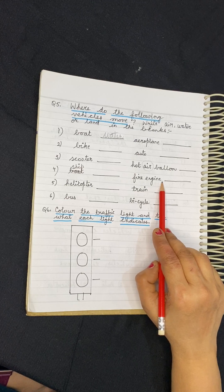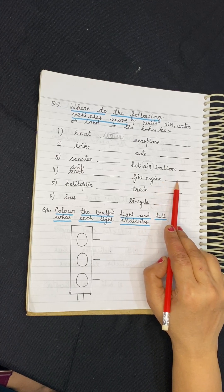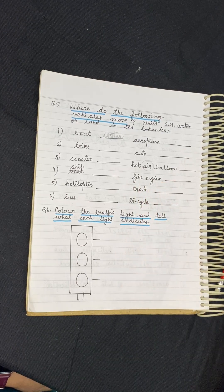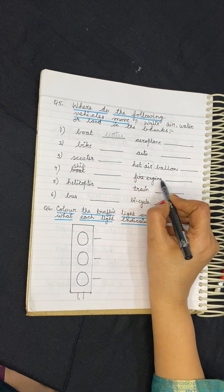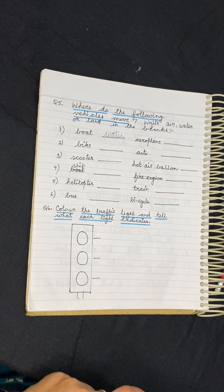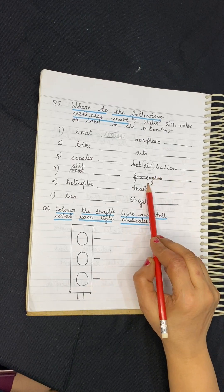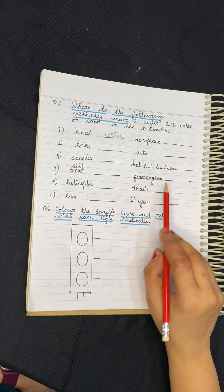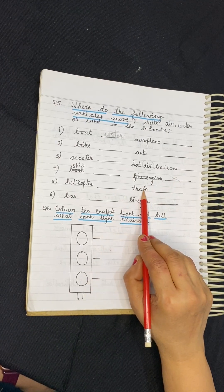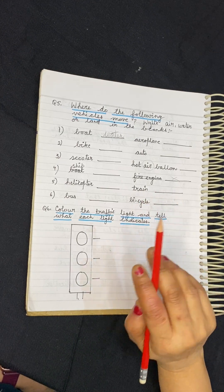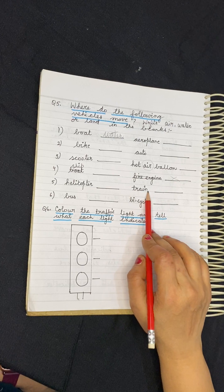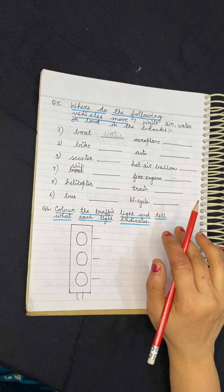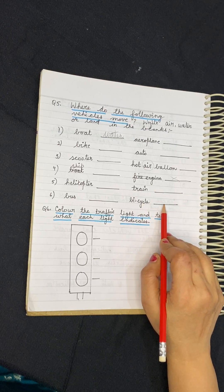Fire engine moves on land, so the answer is land transport. However, it is actually an emergency vehicle — it is not a regular transport, as common people cannot sit and travel in it. Because it is an emergency vehicle, it still moves on land. Bicycle is a land transport.